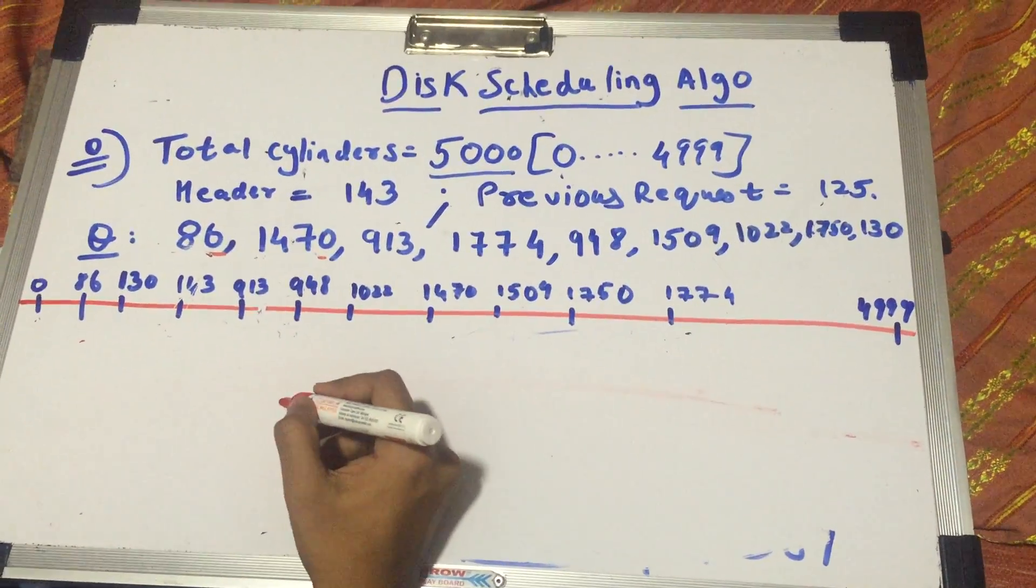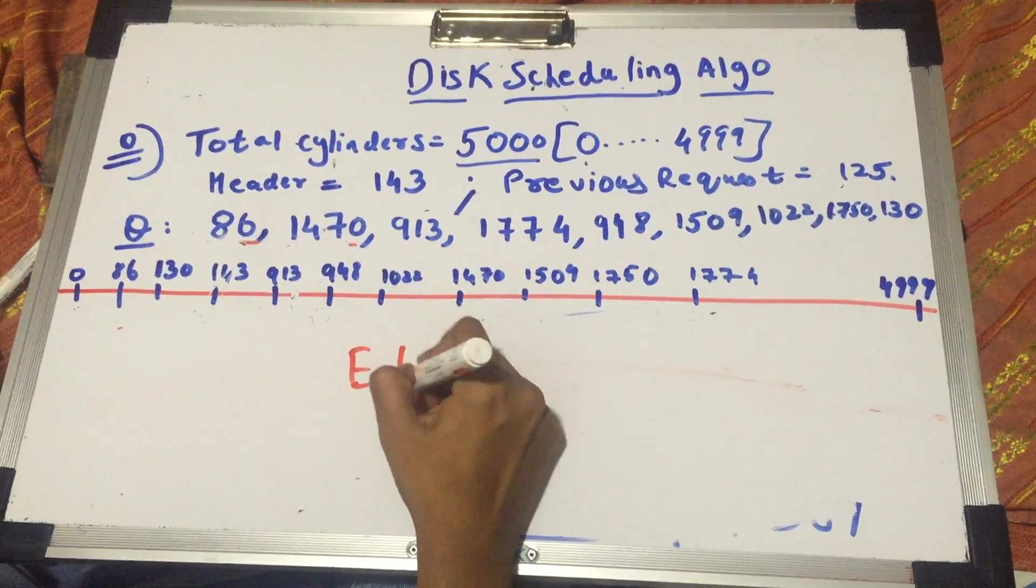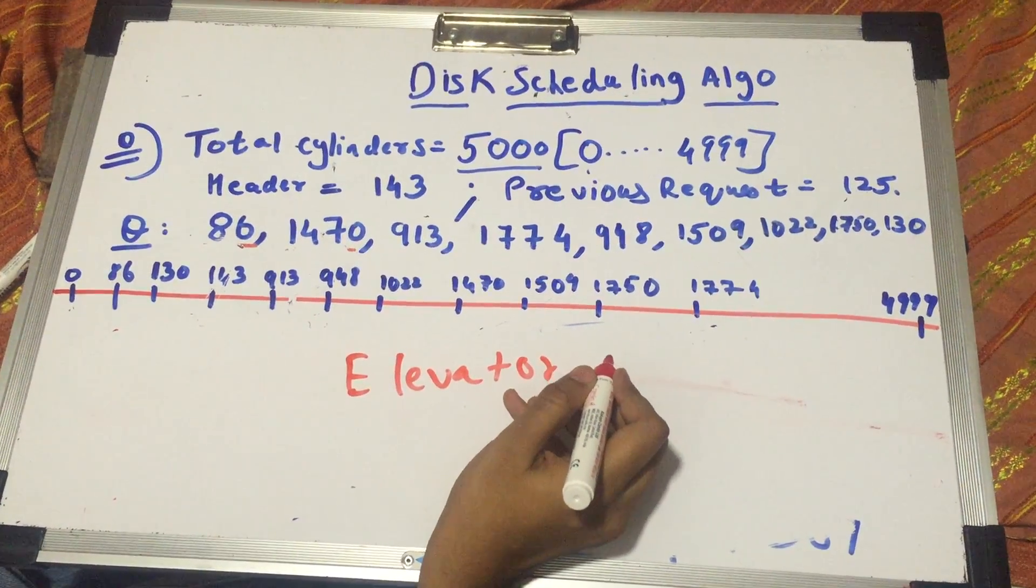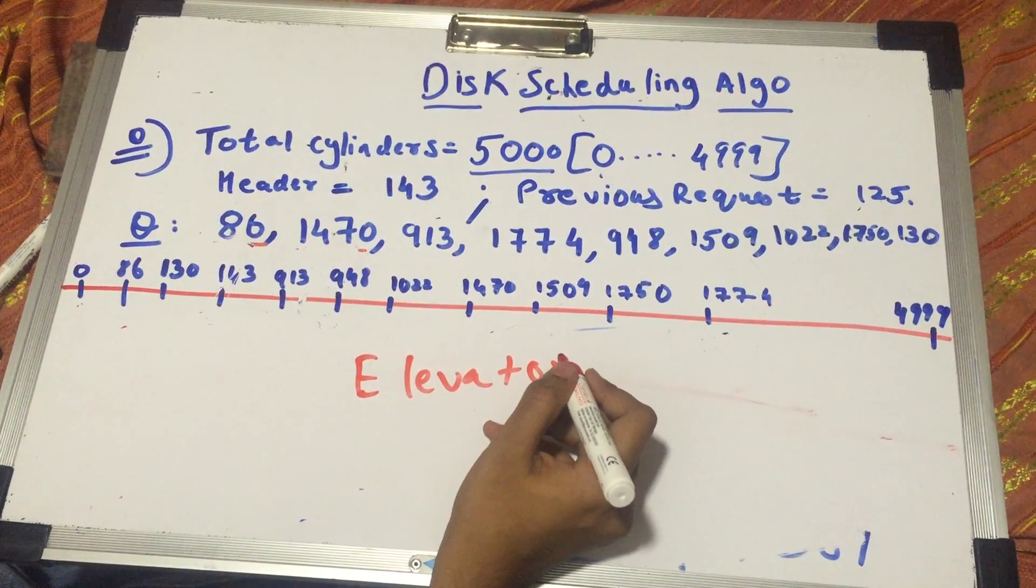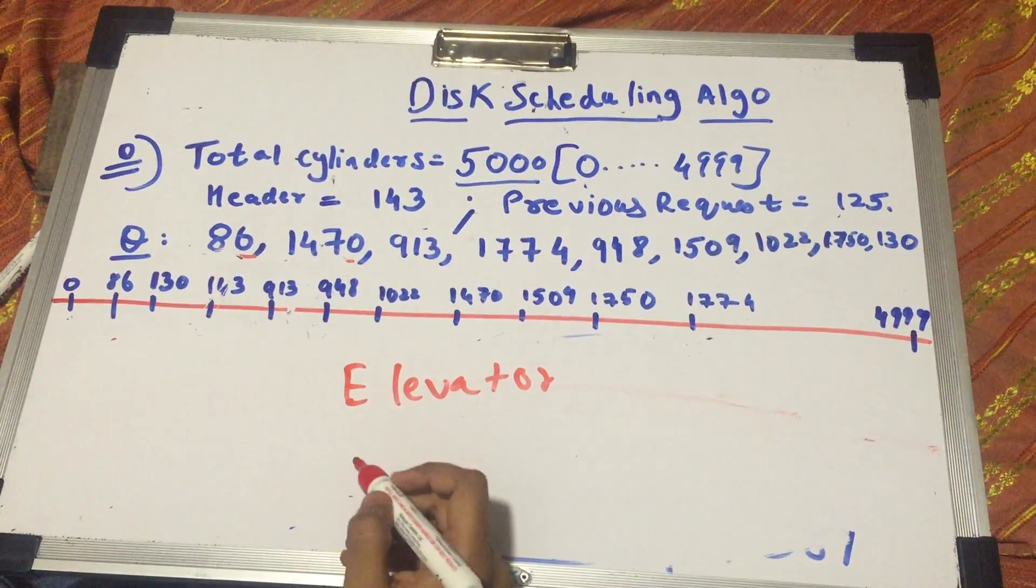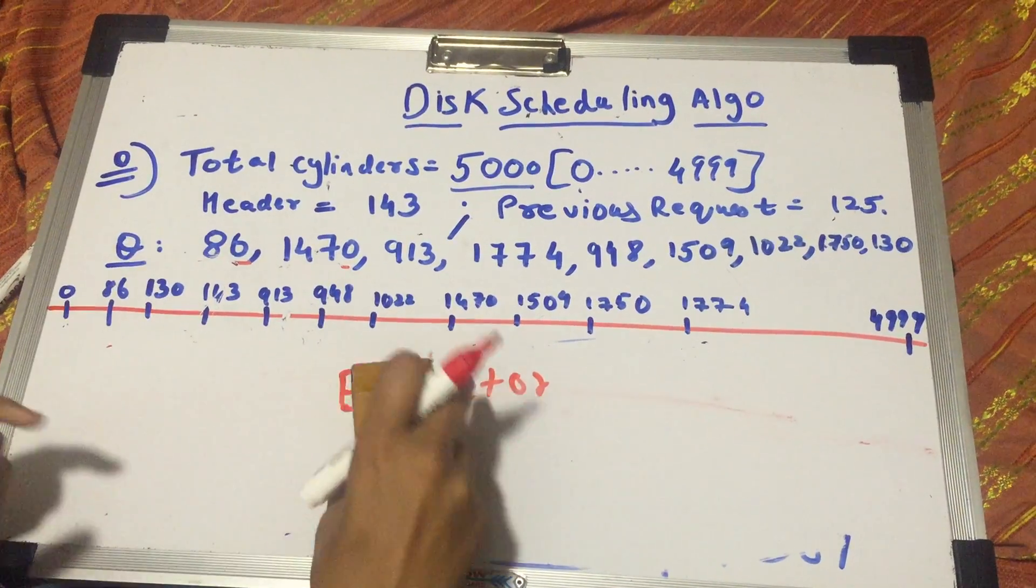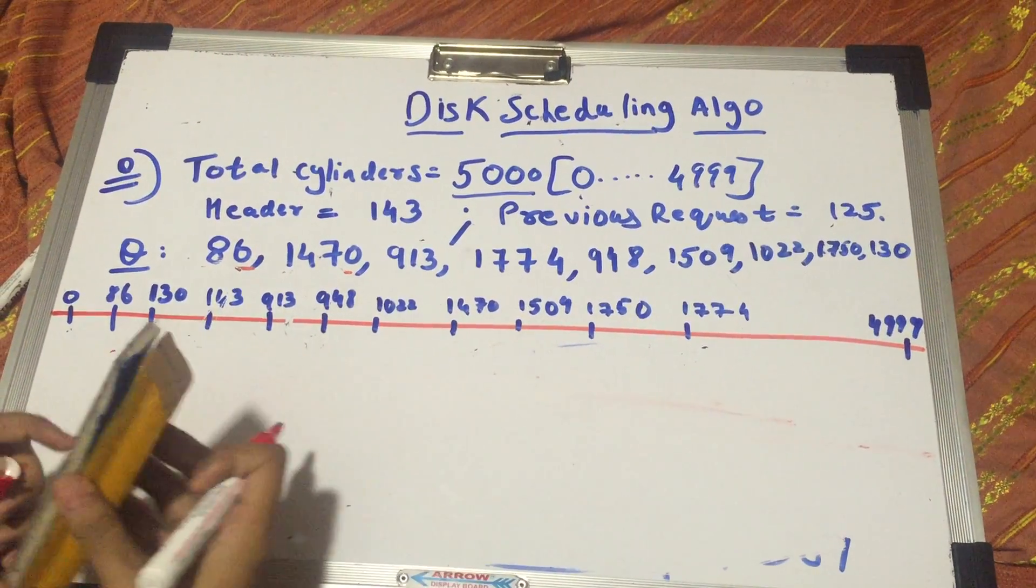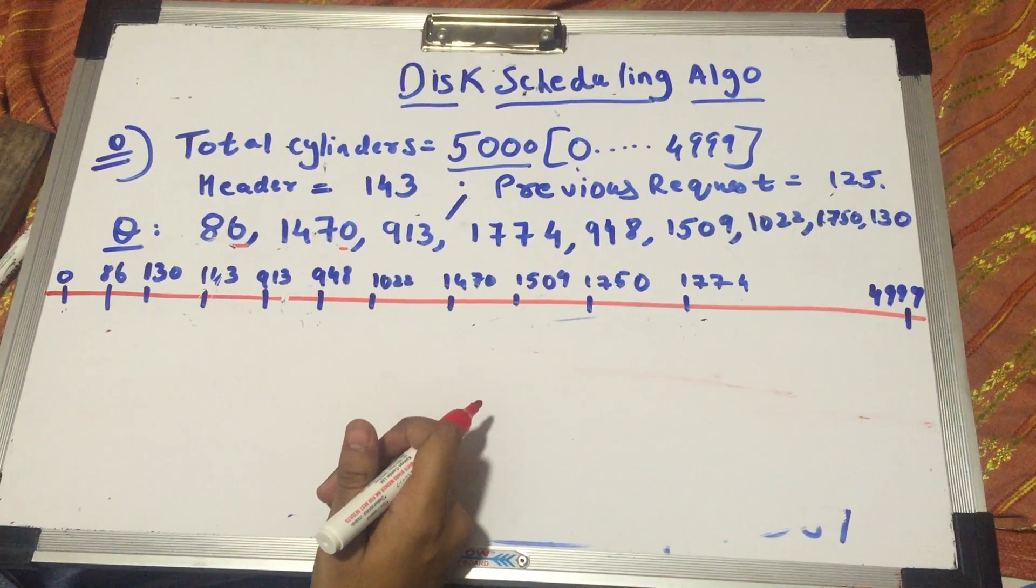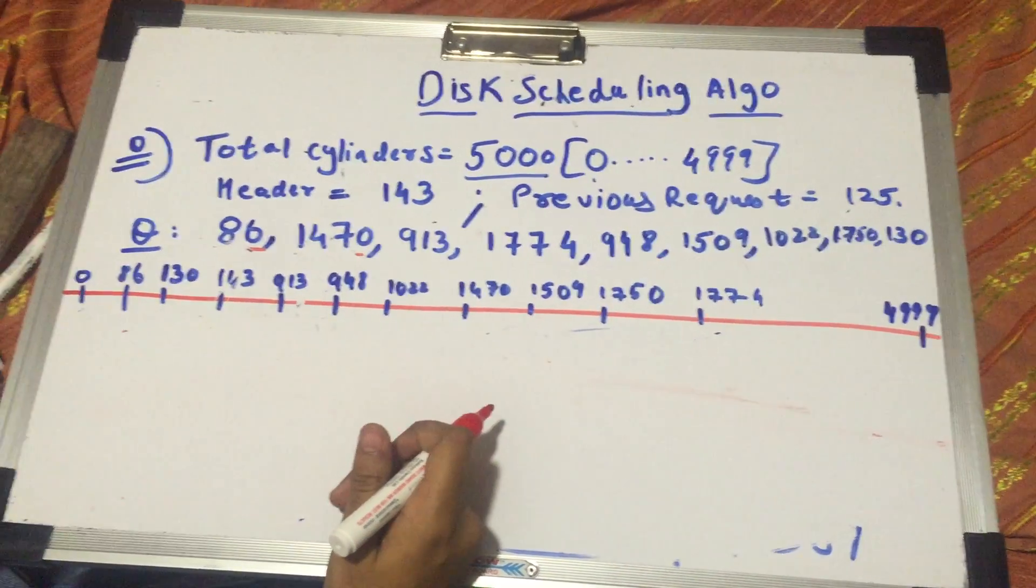A SCAN algorithm is also known as an elevator algorithm. Why is it known as an elevator algorithm? This is because the disk arm acts just like an elevator in a building. Initially, it services all the requests while going up, and when it reverses direction towards down, it services the requests on this way.